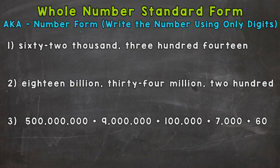Lastly, we have standard form. When I say standard form, I mean that we're going to write numbers in number form — using only digits. We have three examples to go through together. Numbers one and two, we're going to go from word form to standard form. And number three, we're going to go from expanded form to standard form. So let's jump into number one, where we have sixty-two thousand, three hundred fourteen. We're going to take our time, break this word form down, and make sure we properly convert it to standard form.